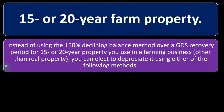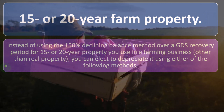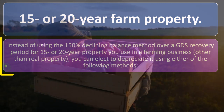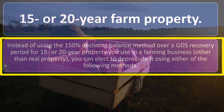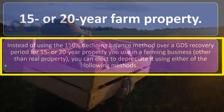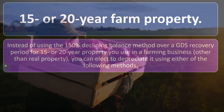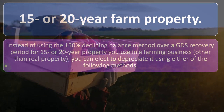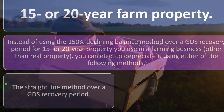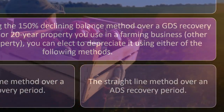For 15 or 20-year farm property: instead of using the 150% declining balance method over the GDS recovery period for 15 or 20-year property used in a farming business other than real property, you can elect to depreciate it using either the straight-line method over the GDS recovery period or the straight-line method over an ADS recovery period.